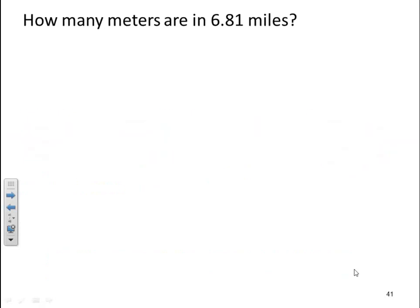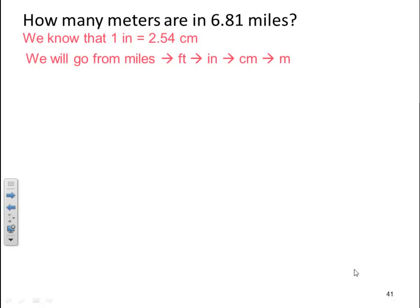Let's do an example. How many meters are in 6.81 miles? Well, we know that our bridge is one inch is 2.54 centimeters. So we got to get from miles to inches. And once we get there, we can do our bridge and then go from centimeters to meters. So we go from miles to feet and feet to inches. So we got to remember all those English conversions. And then we have our bridge of inches to centimeters. And then we have our metric system, which is a prefix difference to get from centimeters to meters.